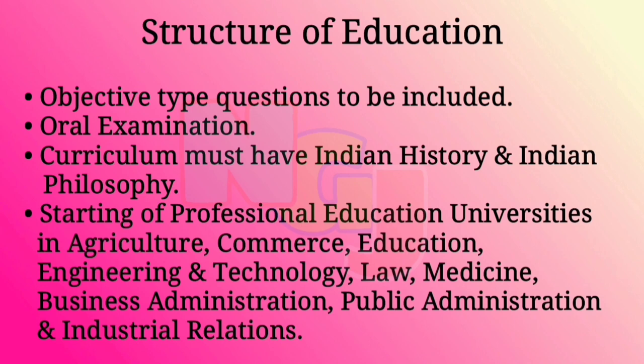They suggested the curriculum must have Indian history and Indian philosophy, as students must know the present as well as the past. For professional education, they recommended starting universities in agriculture, commerce, education, engineering and technology, law, medicine, business administration, public administration, and industrial relations. They recommended separate universities for these courses, terming it professional education.